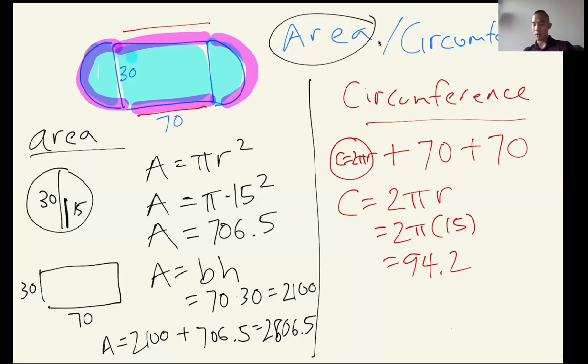And then anyway, so the total area—I mean the total perimeter around the shape—is the 94.2 plus the 70 plus the 70. And together, after all that, we should get 234.2. Let me plug that into my calculator to double check. Yes, 234.2. All right, that's it for today. I hope you guys understand this. There you go, 234.2. I hope you guys understand the difference between area and circumference for this shape. Thank you for watching.